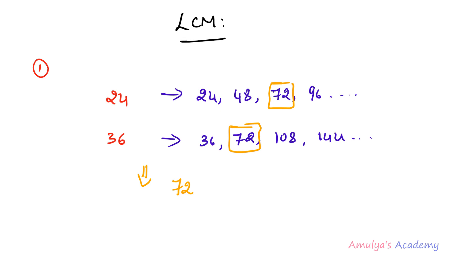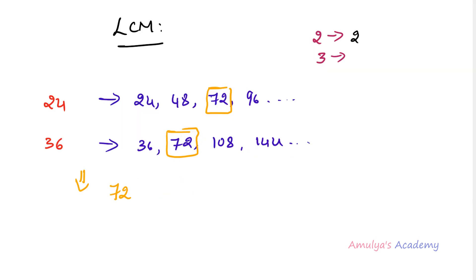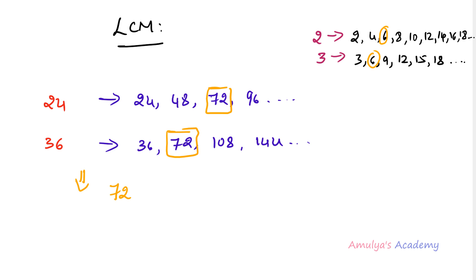In this way we can find out the LCM of two numbers. If I take another example with 2 and 3, multiples of 2 are: 2, 4, 6, 8, 10, 12, 14, 16, 18, etc. Multiples of 3 are: 3, 6, 9, 12, 15, 18, etc. Here we can see multiple common numbers — 6, 12, and 18 — but we need to find out the least common multiple, which is 6. So the LCM of 2 and 3 is 6.